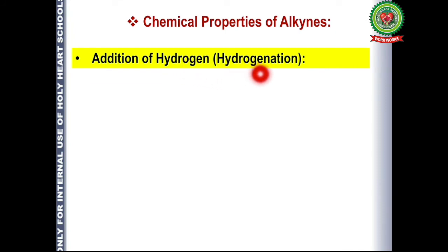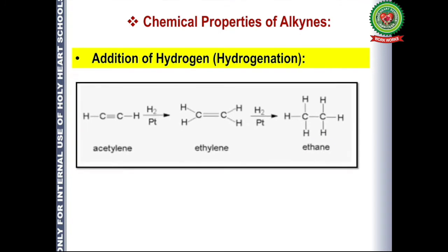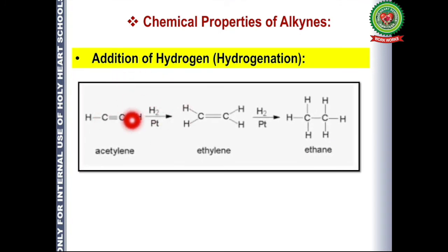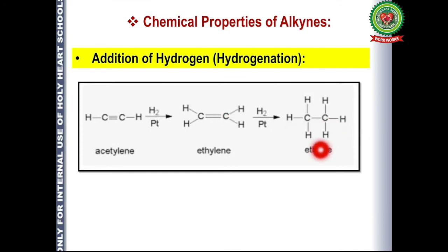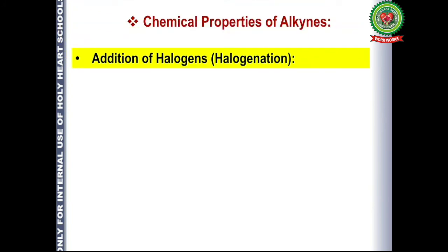The next reaction is addition of hydrogen, also known as hydrogenation. A hydrogen molecule adds itself across the triple bond in the presence of a catalyst — platinum, nickel, or palladium. When hydrogen is added, the triple bond is converted into a double bond, giving ethylene (IUPAC name: ethene). Another molecule of hydrogen then adds across the double bond, converting it into a single bond, giving ethane. So this reaction can be used for the conversion of ethyne to ethene, and ethene to ethane.